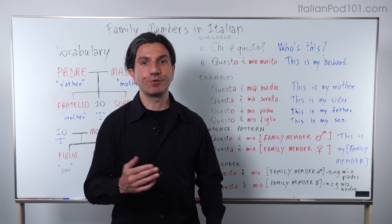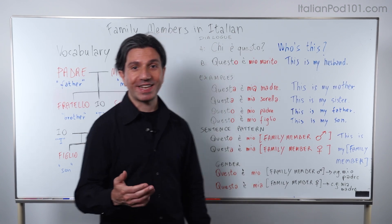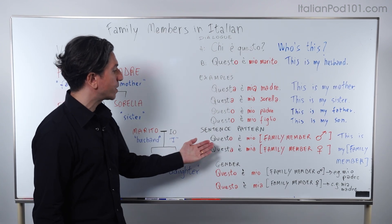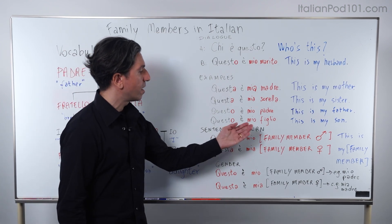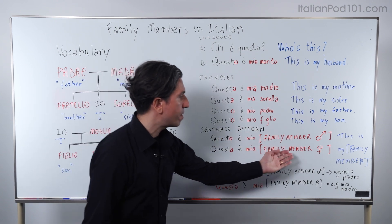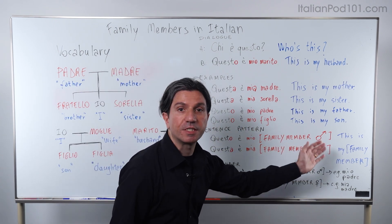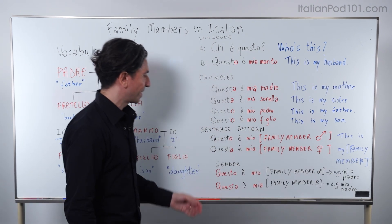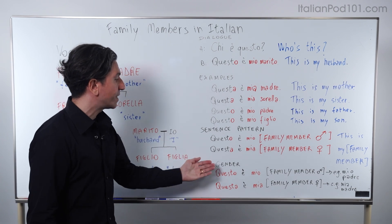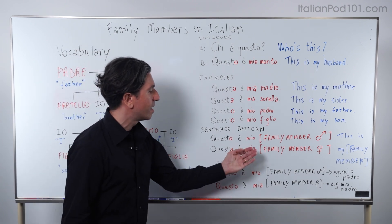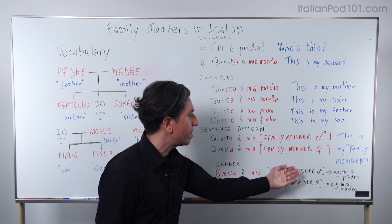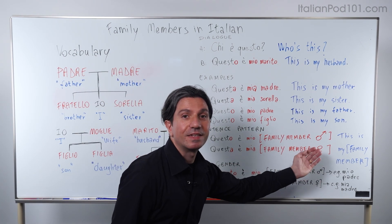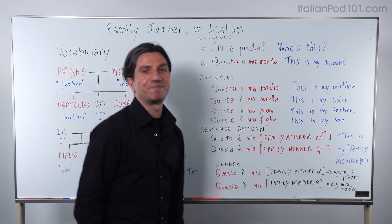I'm sure you could see a pattern, right? Questo è mio [family member] — masculine — means 'This is my family member.' Questa è mia [family member] — feminine — means 'This is my family member.'